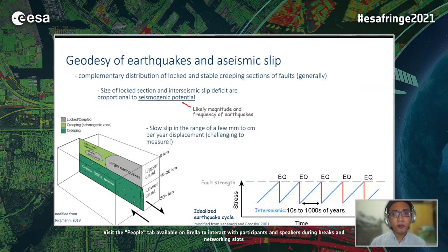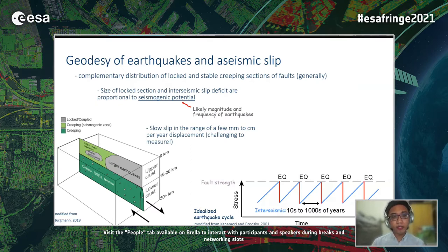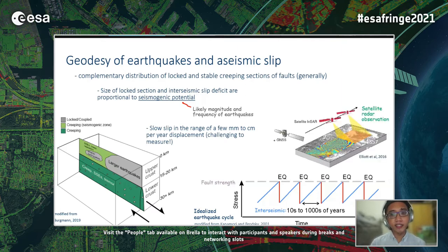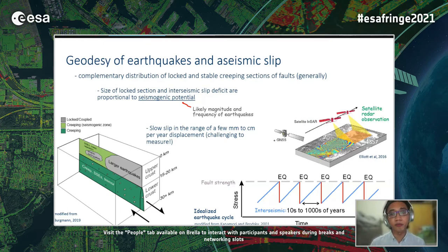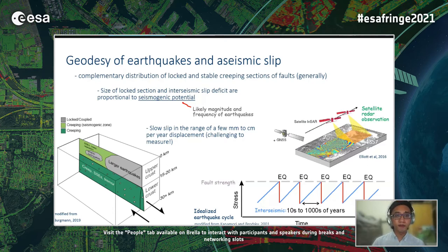The challenge is that slow slip is in the range of a few millimeters to centimeters per year of displacement, and this is not easy to measure. But thanks to advances in INSAR in the past few decades, fault behavior in onshore settings can be studied in more detail than before. This is what we have done for the Philippine fault, as I will share in this presentation.